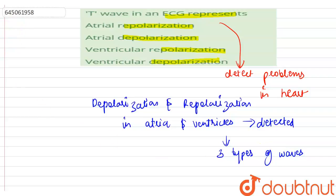The P wave represents the depolarization and repolarization of atria. The QRS complex represents the depolarization of ventricles. And the T wave represents the repolarization of ventricles.